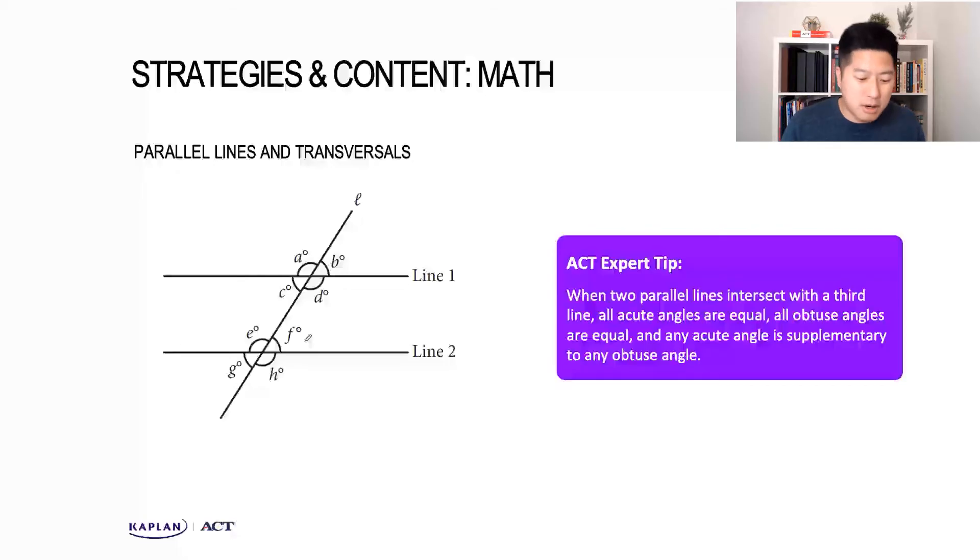Let's quickly review what we need to know about parallel lines and transversals. In the problem before, we saw that alternate interior angles were equal when a transversal went through two parallel lines. It gets better than that, because actually when you have parallel lines cut by a transversal, all the obtuse angles are going to be equal to each other, and all the acute angles will be equal to each other as well. You can see how parallel lines can provide a ton of information that will help you get to an answer.